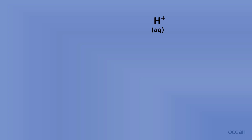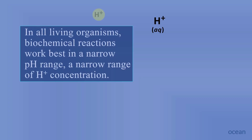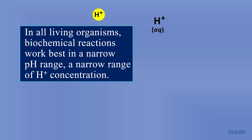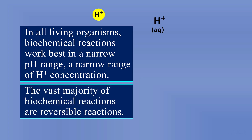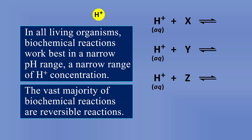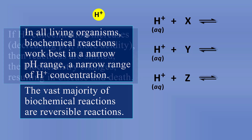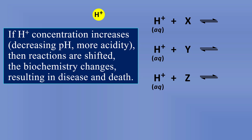What problems does increased hydrogen ion concentration in the water create? In all living organisms, biochemical reactions work best in a narrow pH range — a narrow range of H⁺ concentration. The vast majority of biochemical reactions are reversible. If we increase aqueous hydrogen — decrease the pH, more acidity — reactions are shifted toward the product side. That changes the biochemistry and can cause disease and death. This is true not only among sea creatures but among all living organisms.